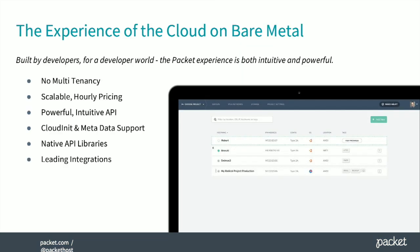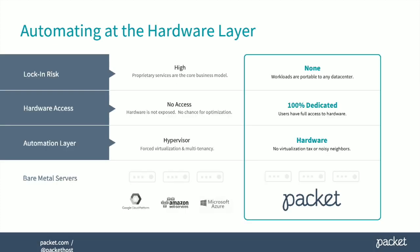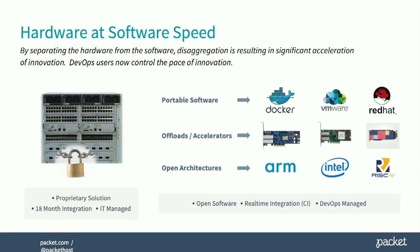So why Packet? We have this model of no multi-tenancy — you get bare metal. We think about this as: there are workloads that just don't work well in a virtualized environment, especially when we push to the edge. Your software ecosystem is probably iterating much faster than your hardware ecosystem. All of these workloads were probably never around ten years ago, and may or may not be around in another ten years when we start talking about this edge problem.